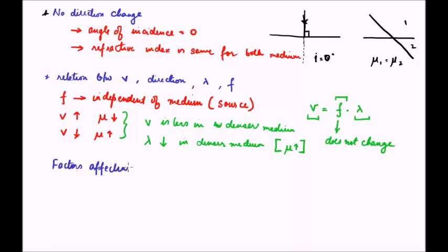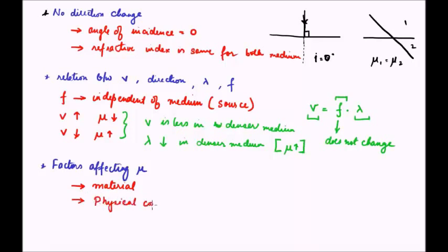Now let us see what the refractive index itself depends on — the factors affecting refractive index. The first factor, as will be quite evident, is the material. Refractive index is a material property. Air has a different refractive index, water has a different refractive index, glass has a different refractive index. So depending on which material we are talking about, it will have a specific refractive index. Material is the foremost factor defining the refractive index.